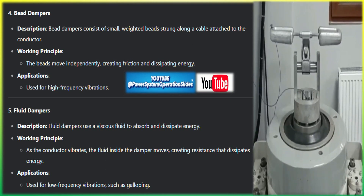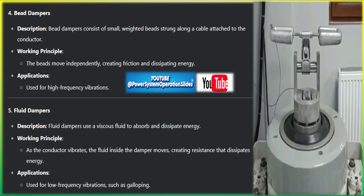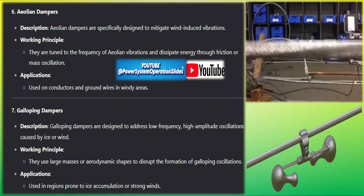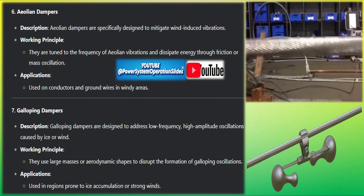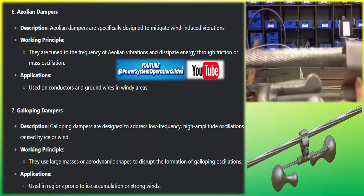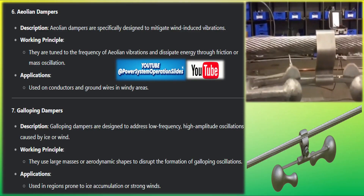Subspan oscillation occurs in bundled conductors when wind causes oscillations in individual conductors between spacers in a subspan. These vibrations are lower in frequency and amplitude than Aeolian vibration but can cause wear at the spacer locations.